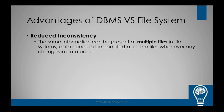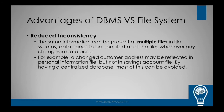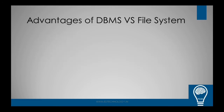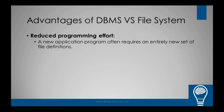The next issue is that because data is stored at different places, it can create inconsistency. Sometimes the same information is stored in multiple files, and if this data is not updated properly, it can lead to inconsistent data. For example, a customer's address may be reflected in the personal information file but not updated in the savings account file, creating inconsistency — which can be avoided by DBMS.